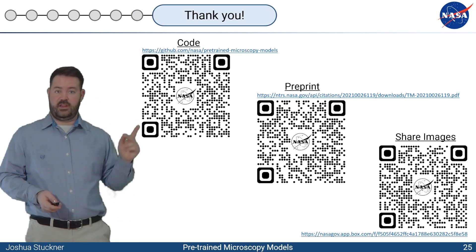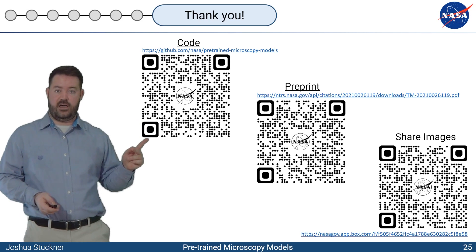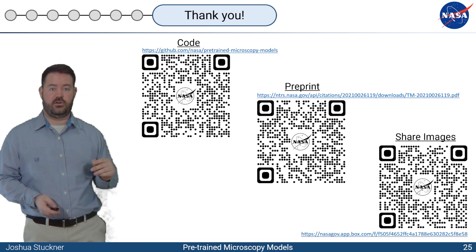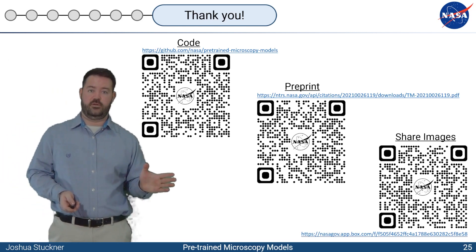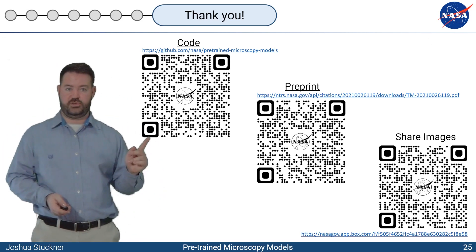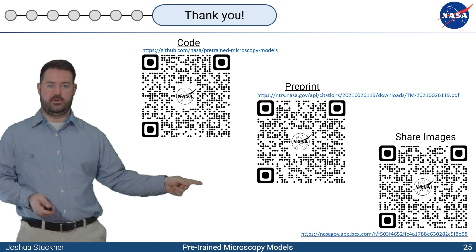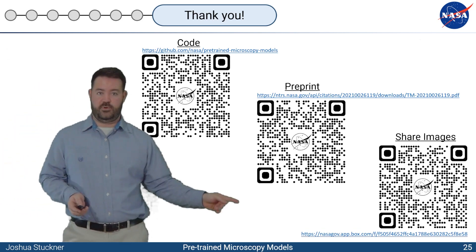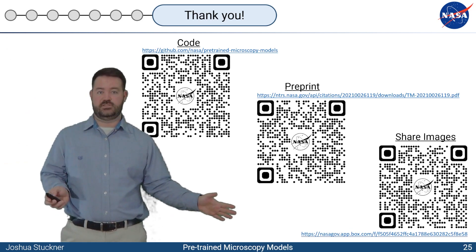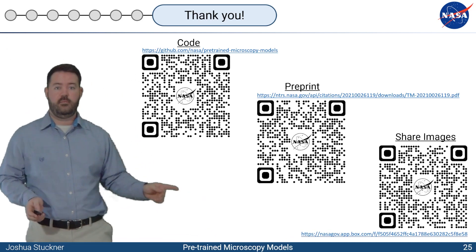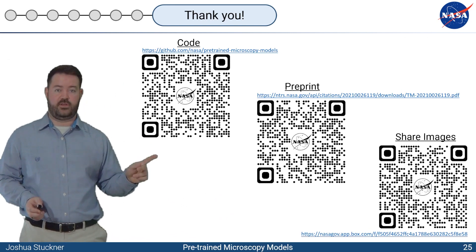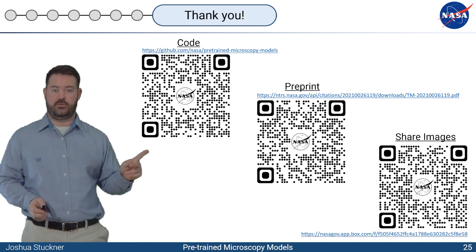All the code is available here. You can check it out. You can download the pre-trained encoders. If you're using ImageNet pre-training already, then it's only a line or two of code in order to use the Micronet pre-training encoders. The pre-prints of the paper is here. If you'd be willing to share images with us, then you can put them here. If you mark them as confidential, then I won't share them with anyone. But what we can do is use them to pre-train even better encoders and we'll put that back on the repo.